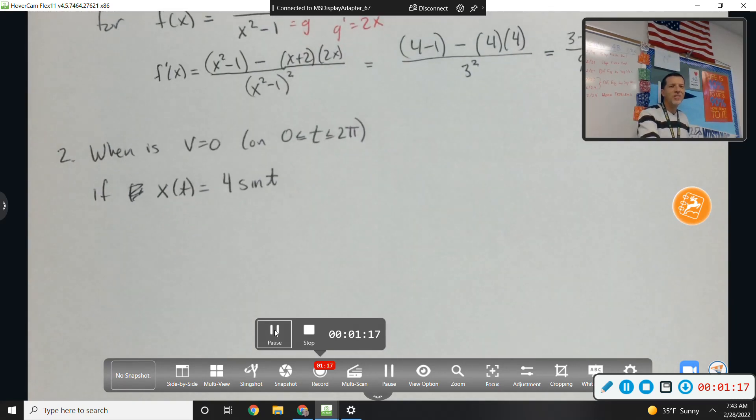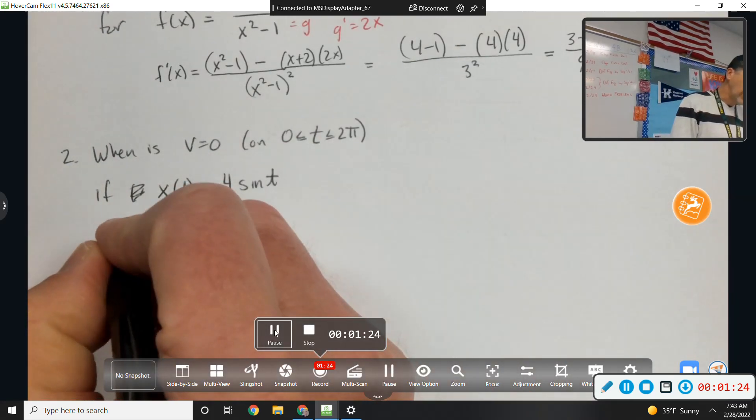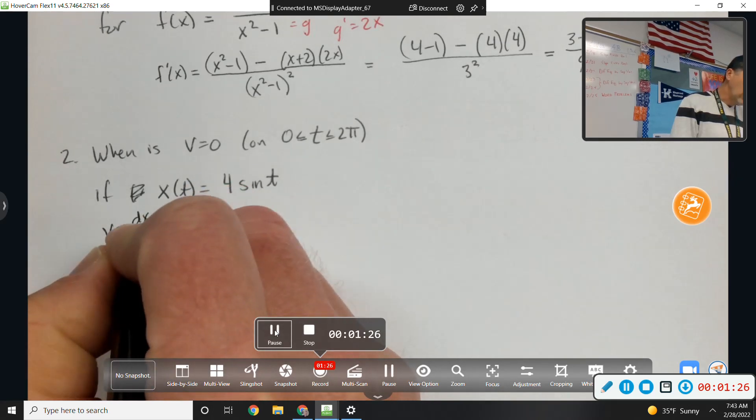Number two, when is v equals 0 if x of t equals 4 sine t? So the main point of this one is, don't forget that velocity is derivative of position.